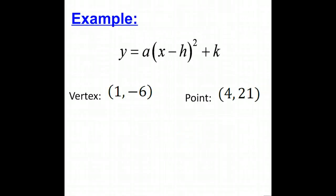Let's try an example. So we have our vertex form of our equation, y equals a times the quantity x minus h squared plus k. And we will use as our vertex 1, negative 6, and a point sitting on the parabola 4, 21.